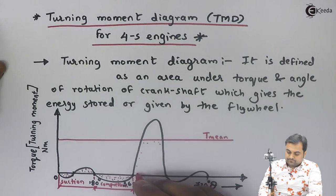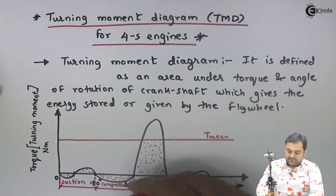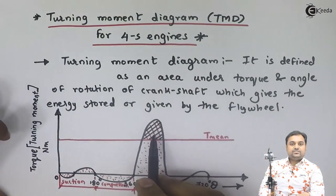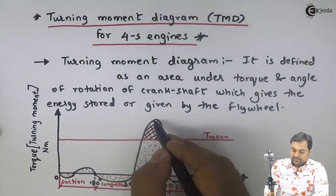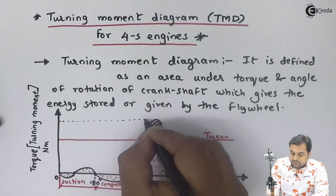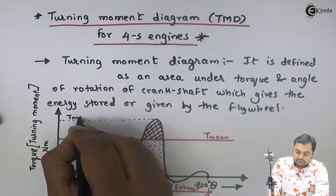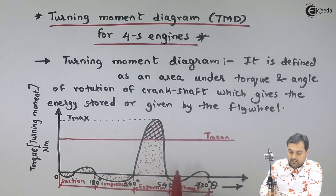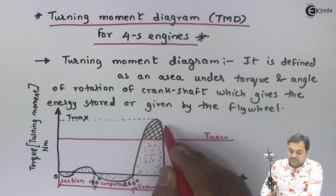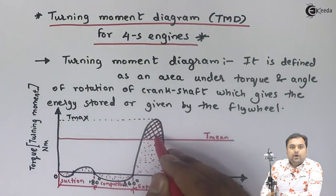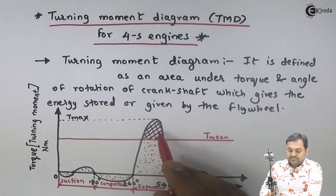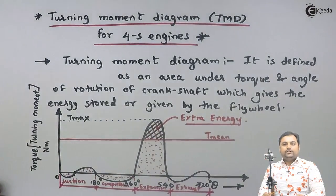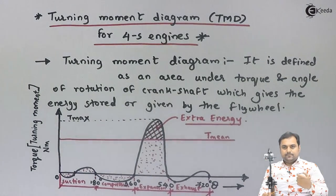In the expansion stroke, also called the power stroke, we get extra work above the mean torque line. This shaded area represents the maximum torque. Since the engine only requires mean torque for operation, this extra energy above the mean is stored in the flywheel.